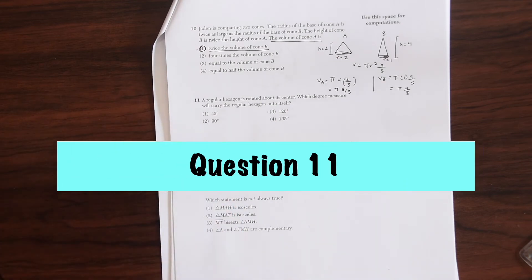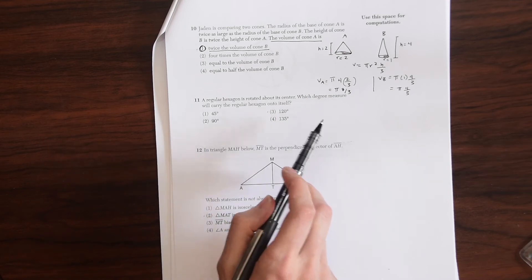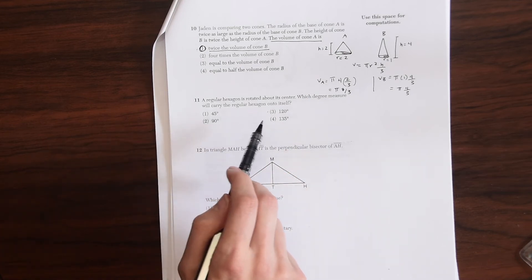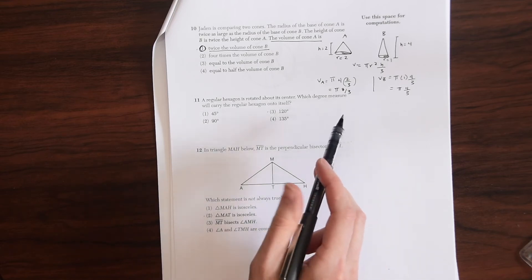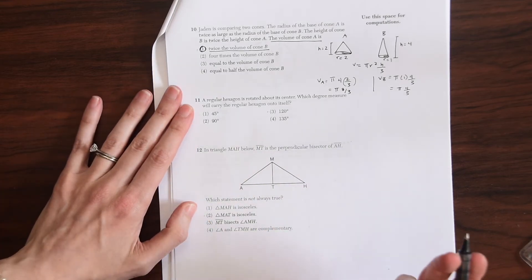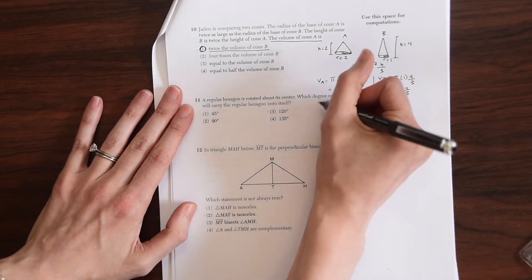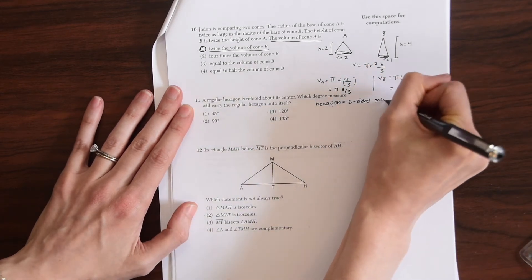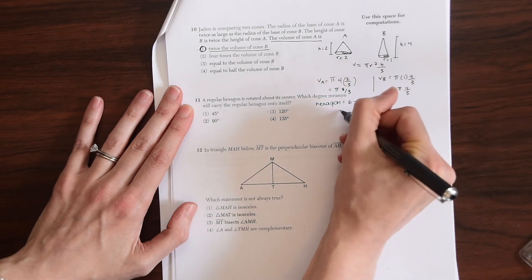For question 11, we have a regular hexagon is rotated about its center. Which degree measures will carry the regular hexagon onto itself? So which degree measure will carry the regular hexagon onto itself? So remember a hexagon is a six-sided polygon. So let's draw that out quick.